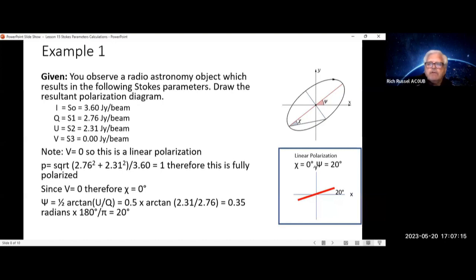I made a calculator on Excel that used those formulas, so I can enter in the psi and chi values and the intensity, or enter in the IQUV values, and that would result in the resultant psi and chi values.